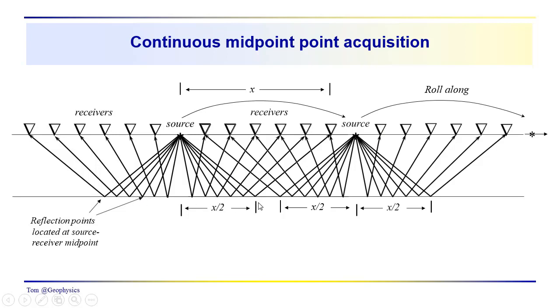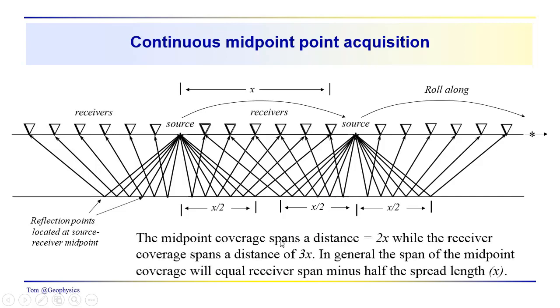It gives us roughly continuous midpoint coverage. You can see here in this case that the midpoint coverage spans a distance equal to 2x, including this set of reflection points out here, while the receiver coverage spans a distance of x. So in general, the span of the midpoint will be equal to the receiver span minus half the spread length. So the total span of the receivers, depending on how far out in this direction we go or in this direction we came from, we'd have that total length and we'd subtract from that. Our midpoint coverage will be that total length minus half the spread length.